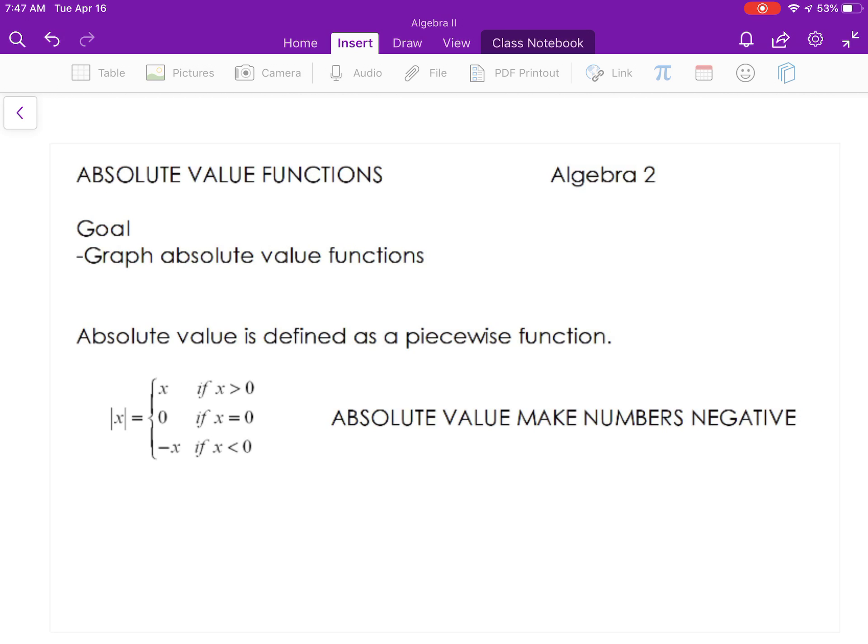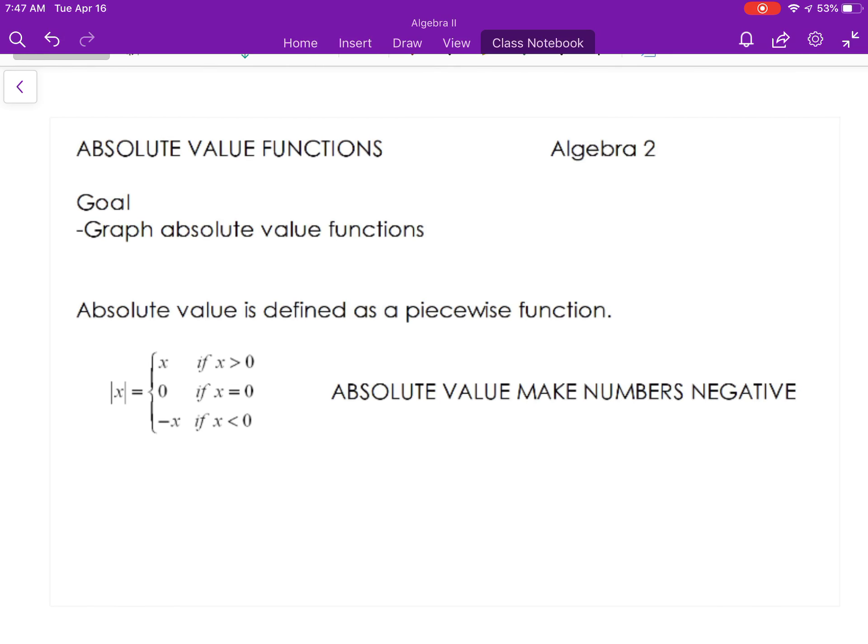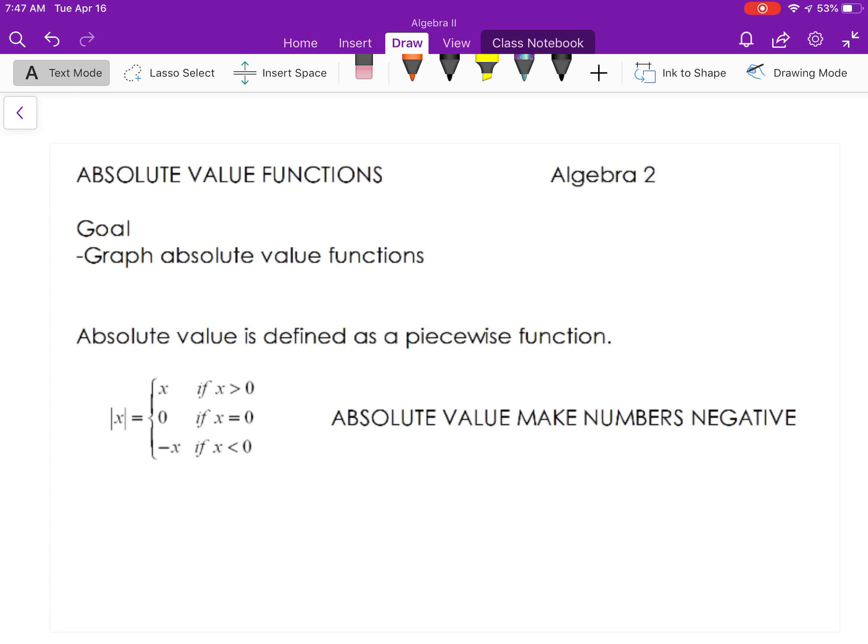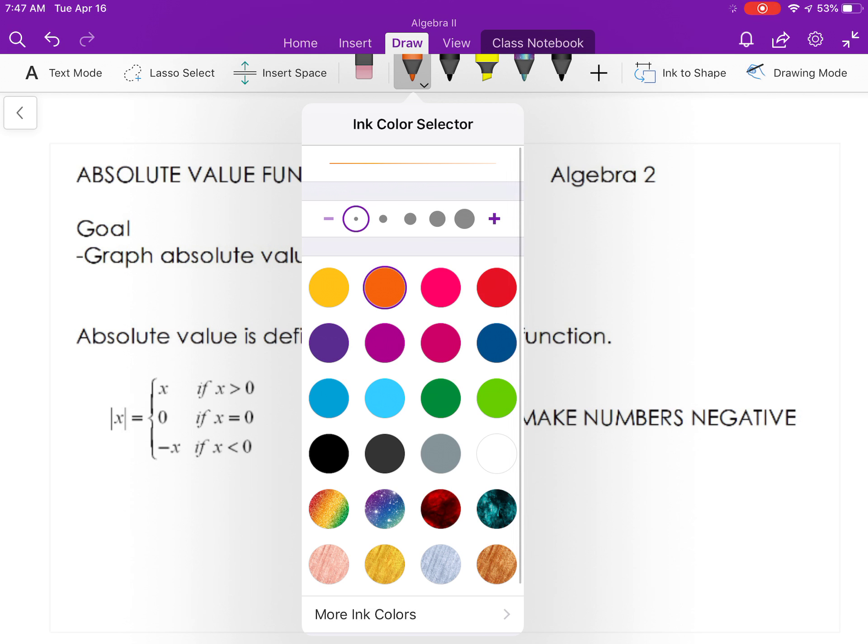Absolute value functions. You all remember the absolute value function. You've used it in the past. The absolute value of x is an x with these two vertical lines, one to the left and one to the right of that variable. What that means is that absolute value will make any value that you put into it turn positive.